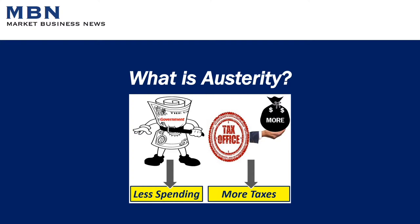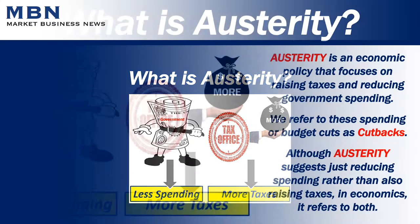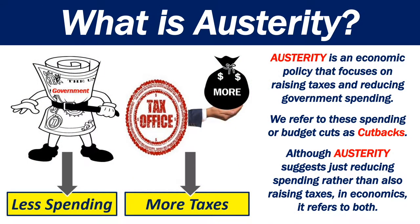What is austerity? Austerity is an economic policy that focuses on raising taxes and reducing government spending. We refer to these spending or budget cuts as cutbacks. Although austerity suggests just reducing spending rather than also raising taxes, in economics it refers to both.